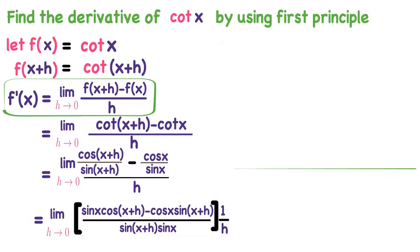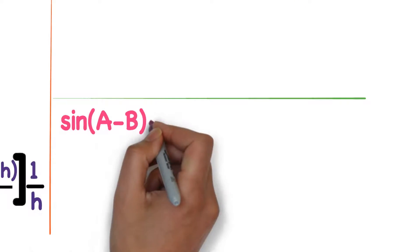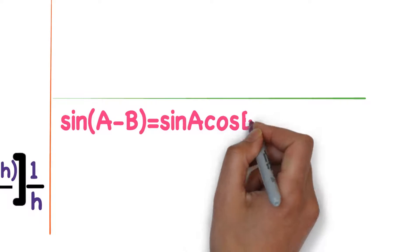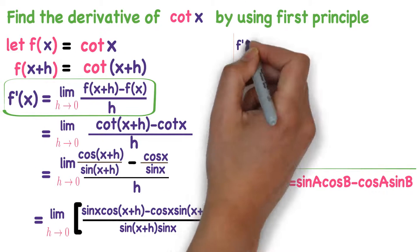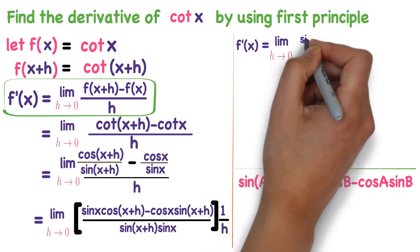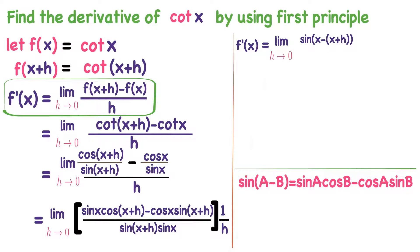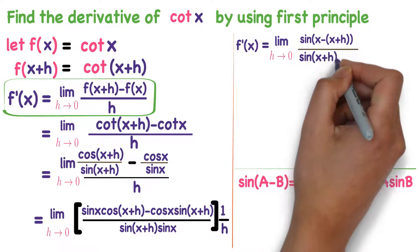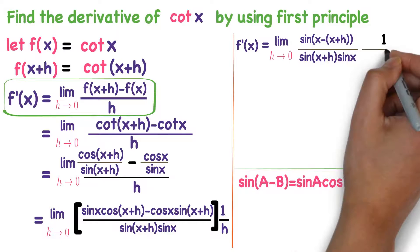We know the formula of sin a minus b. What is sin a minus b? It equals sin a cos b minus cos a sin b. You apply the same thing to the previous step. Limit h tends to 0 — if you observe the numerator, it is of the form sin a minus b, where a is x and b is x plus h. So the numerator is sin of x minus x plus h, divided by sin of x plus h into sin x, multiplied by 1 divided by h.